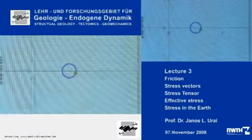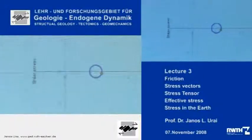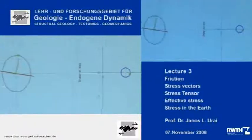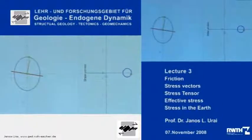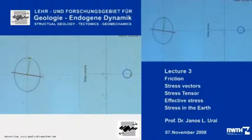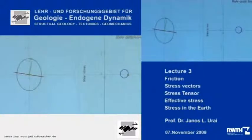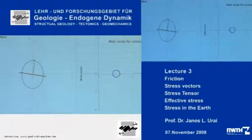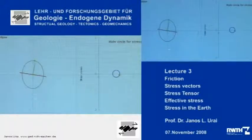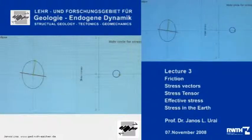It is very interesting to note — and you can play around with it if you've downloaded this spreadsheet — that this point on the Mohr Circle travels twice as fast as the plane is rotating. The reason for that is that we have 2-theta in the formula of the derivation.